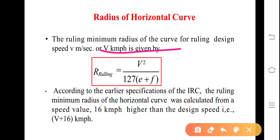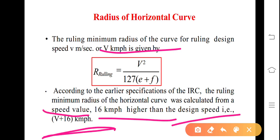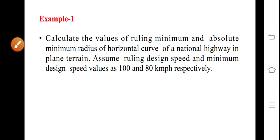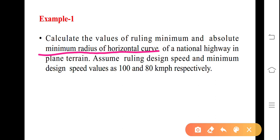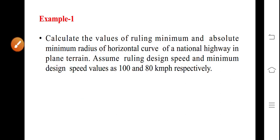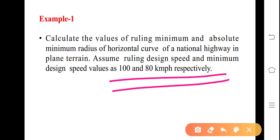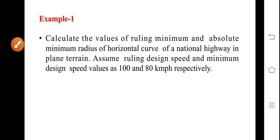As per earlier IRC specifications, the ruling minimum radius of the horizontal curve was calculated from a speed value 16 km/h higher than the design speed, i.e., v + 16 km/h. Example problem: Calculate the values of ruling minimum and absolute minimum radius of horizontal curve on a national highway in plain terrain. Assume ruling design speed and minimum design speed as 100 and 80 km/h respectively.